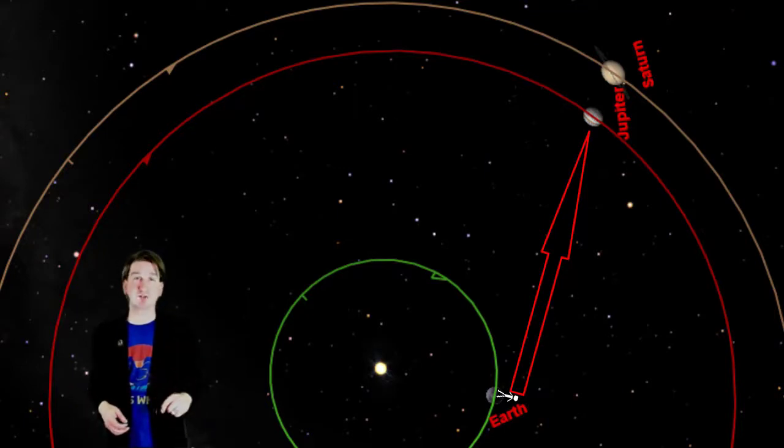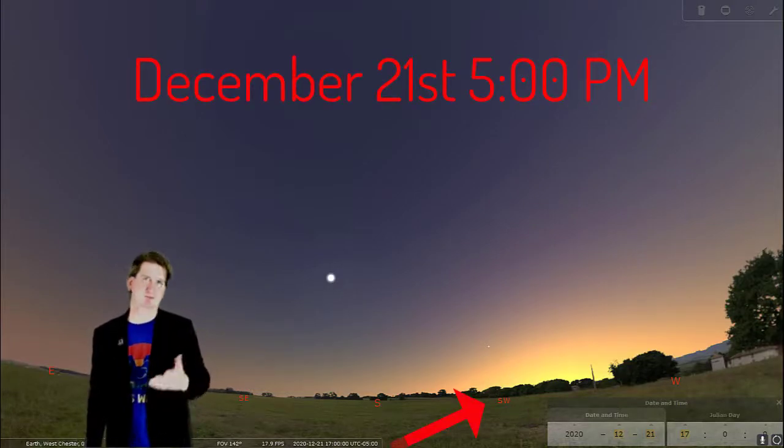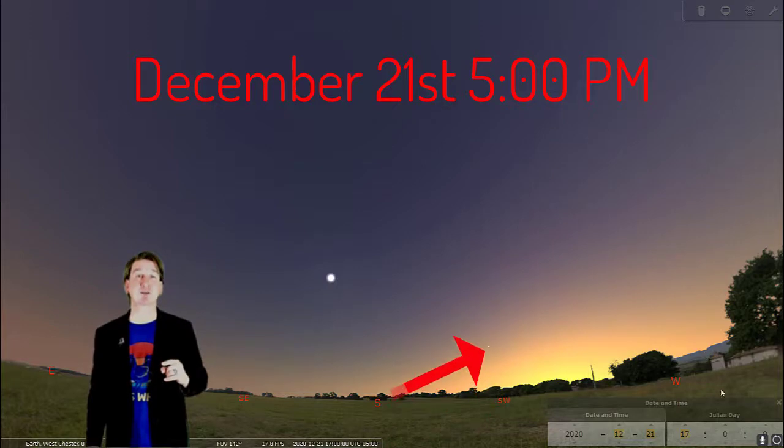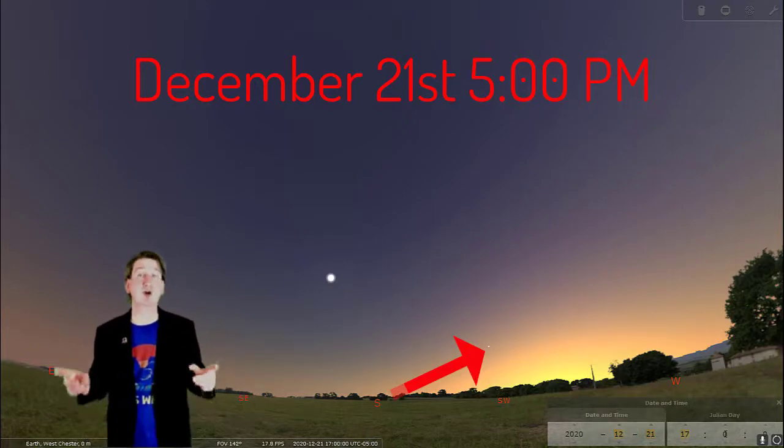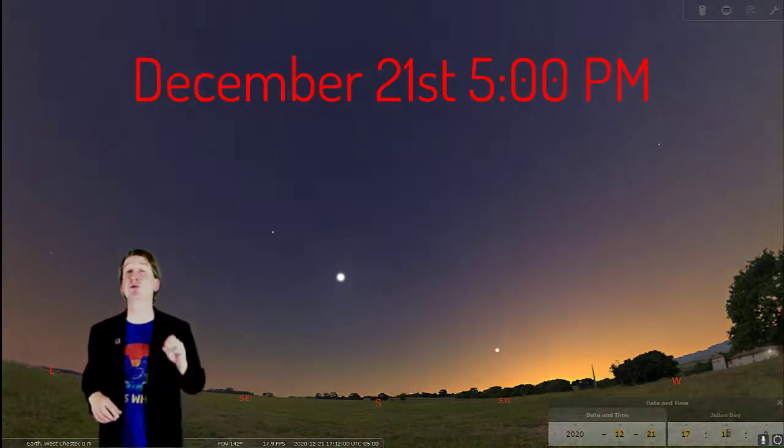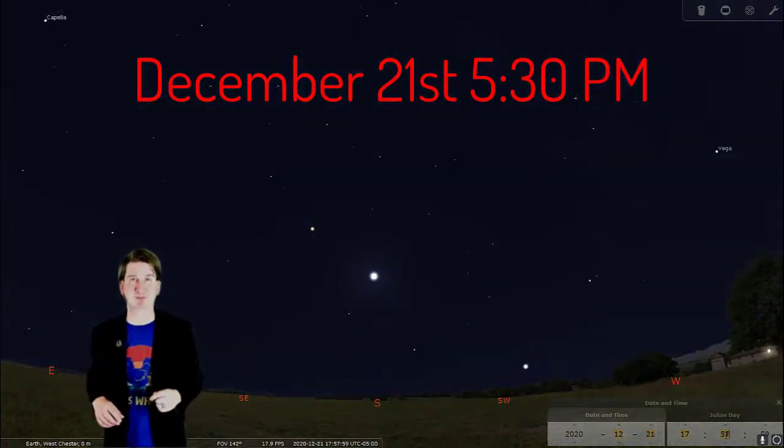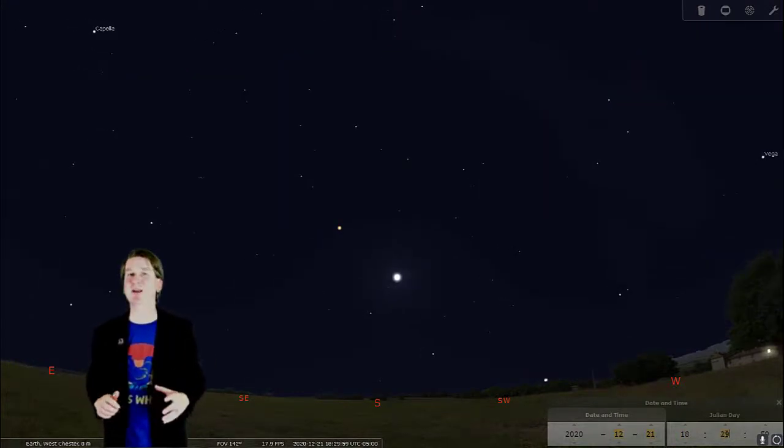To see the Great Conjunction on the night of the 21st, you will need to go out just after sunset and look to the southwest, the direction where the sun just set. Look about 15 degrees above the horizon. This is about the distance between your pinky and pointer finger stretched out at arm's length. Jupiter and Saturn will appear almost as a single bright light in this direction. Be sure to get out early, because this particularly picturesque planetary pairing will set below the horizon by about 6:30. If you are unable to catch this conjunction on the 21st, these two planets will still be a magnificent sight the few days before and after the 21st.